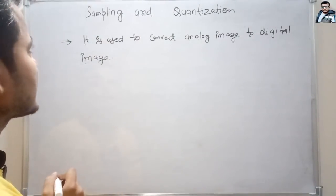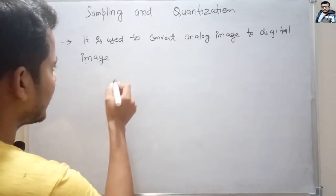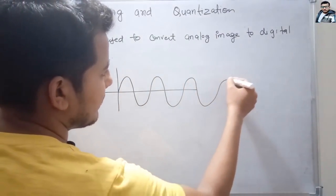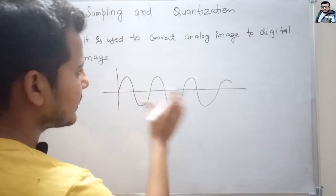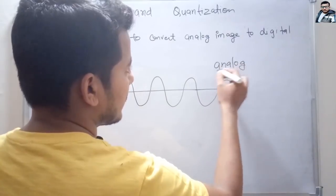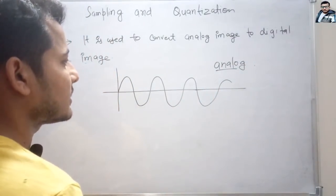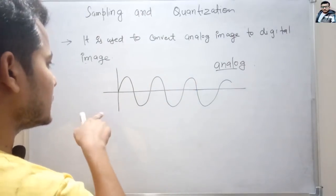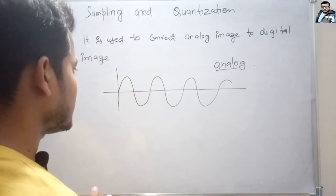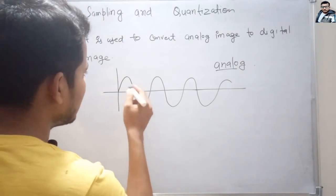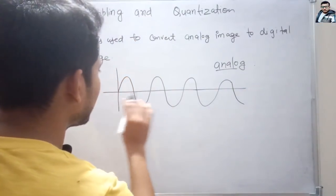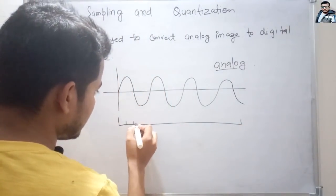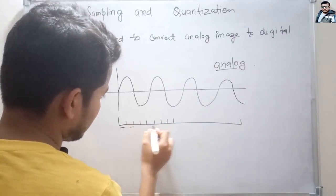Let's understand sampling and quantization in greater detail. Suppose we have a sinusoidal wave and we have to convert this analog wave to digital form. This includes two steps: first sampling, then quantization. In sampling, we divide this wave into some equal parts and take samples at those points.